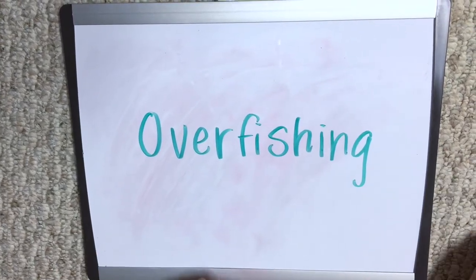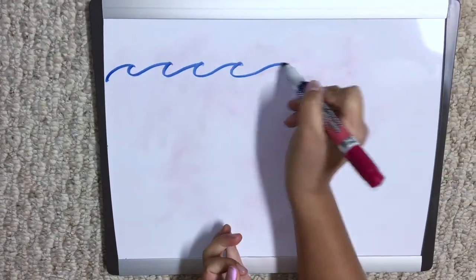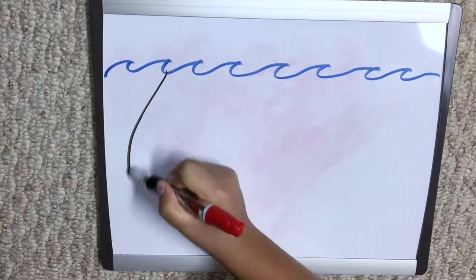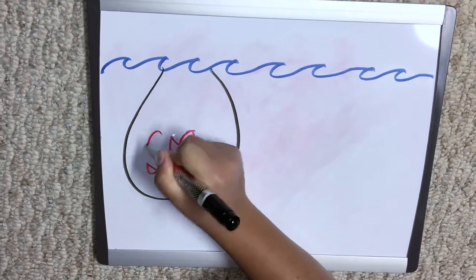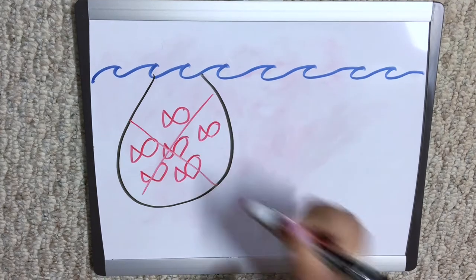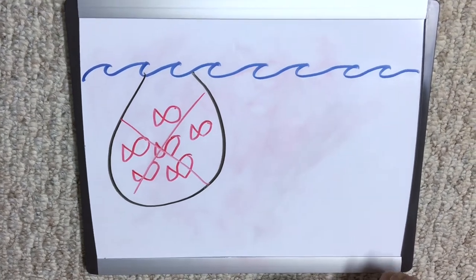Overfishing. Overfishing diminishes a fishery to where too many adult fish are caught and not enough can replenish a population. It leads to an overall degradation of a system.